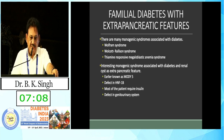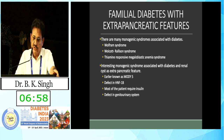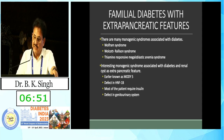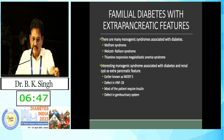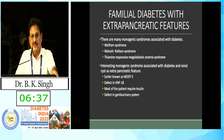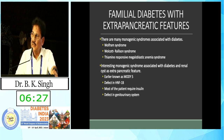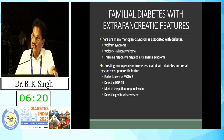The fourth common variety of monogenic diabetes mellitus is familial diabetes with extra-pancreatic features. There are many monogenic syndromes associated with diabetes, including Wolfram-Walcott-Wilson syndrome and thiamine-responsive megaloblastic syndrome. Of particular interest is the monogenic syndrome associated with diabetes and renal cysts as an extra-pancreatic feature — earlier known as MODY5, caused by defects in HNF-1 beta. Most patients require insulin, and there is a defect in the genitourinary system. Diabetes in early age with genitourinary involvement should raise suspicion of HNF-1 beta.